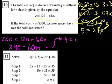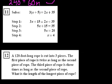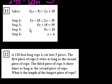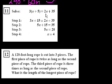Problem number 11. They want us to determine what was the first incorrect step that they did in this problem. Solve 3 times x plus 5 is equal to 2x plus 35. In this first step, they distributed 3 times x and 3 times 5 — 3x plus 15 is equal to 2x plus 35. Step 1 looks good to me — they distributed the 3.